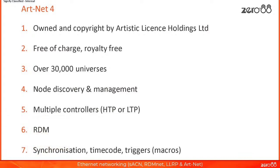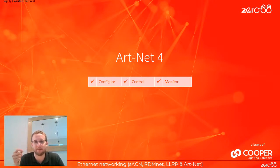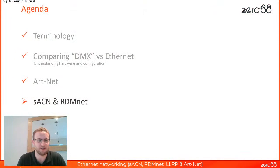Artnet also supports a ton of other useful things. One is synchronization — if you're sending hundreds or thousands of universes, you need to make sure that when you hit go, that happens at the same time across all universes. There's no point universe one happening, then two, then three — however quick that is, you might start to see differences. Artnet solves that with synchronization. It also deals with triggers and time codes. So Artnet allows you to configure, control and monitor — the three things we want to be able to do.